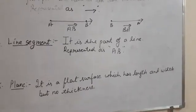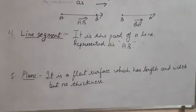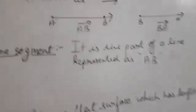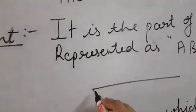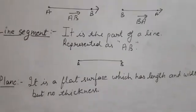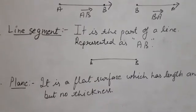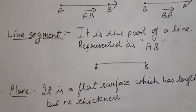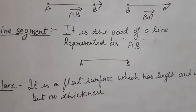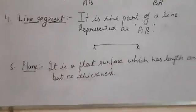A line segment has a fixed length and both a starting and an ending point. If I ask you to draw line segment AB, you make a line and mark this point as A and this point as B. We don't need to draw any arrow because it is a part of a line and will not continue to move in any direction — it has a fixed length with a definite starting and ending point.